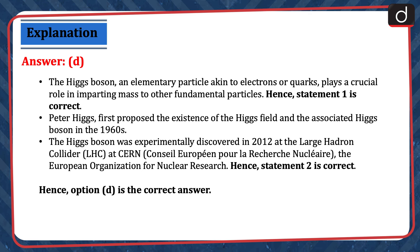The Higgs boson, an elementary particle akin to electrons or quarks, plays a crucial role in imparting mass to other fundamental particles — hence statement one is correct. Peter Higgs first proposed the existence of the Higgs field and the associated Higgs boson in the 1960s. The Higgs boson was experimentally discovered in 2012 at the Large Hadron Collider at CERN, the European Organization for Nuclear Research — hence statement two is correct. Therefore, option D is the correct answer.